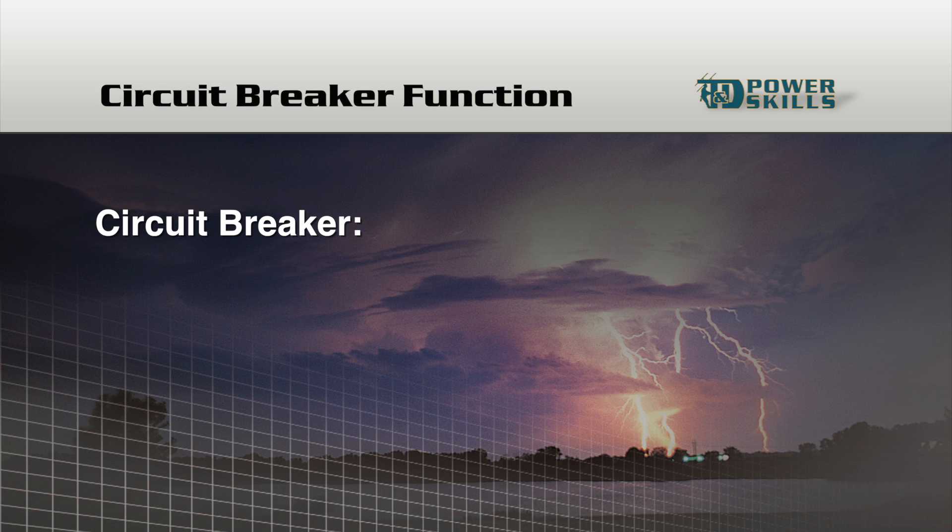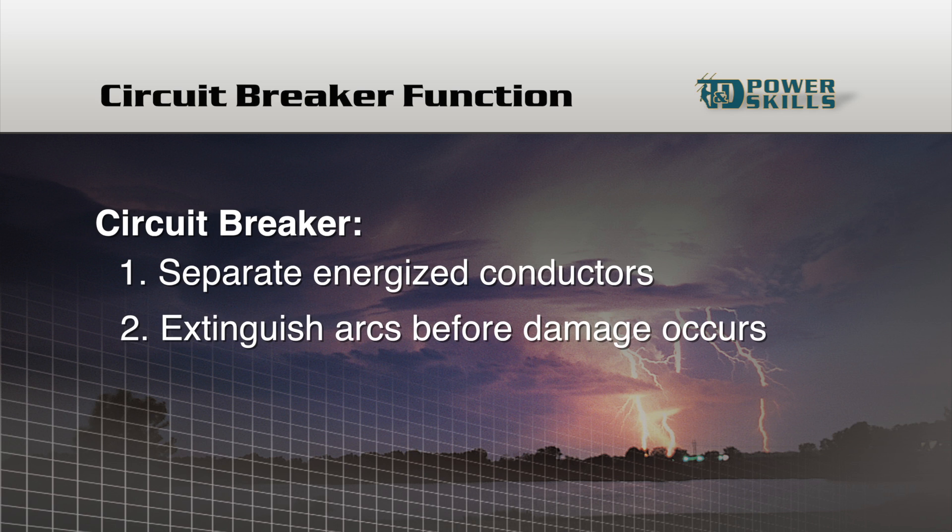A circuit breaker plays a critical role in a T and D system. It not only has to separate energized conductors, but it also has to quickly extinguish the arc that is created before any significant damage occurs.